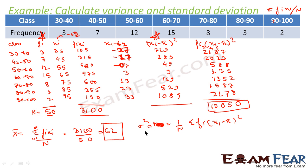Now let's apply the formula. Variance equals 1 by n times sigma fi times xi minus mean squared. That is 1 by 50 times 10,050. Canceling, we get 201. This is the value of variance.